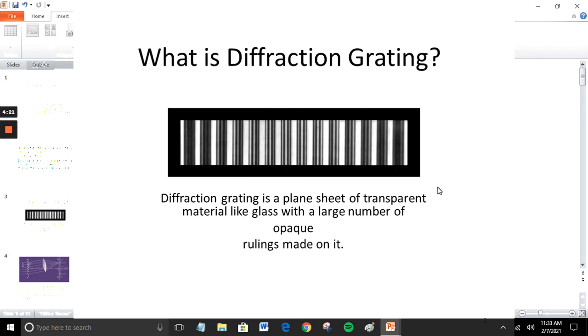Diffraction grating is a plain sheet of transparent material like glass with a large number of opaque rulings made on it. There will be about 600 rulings per mm.